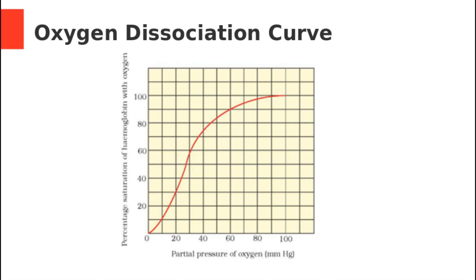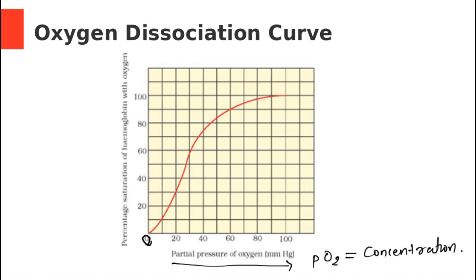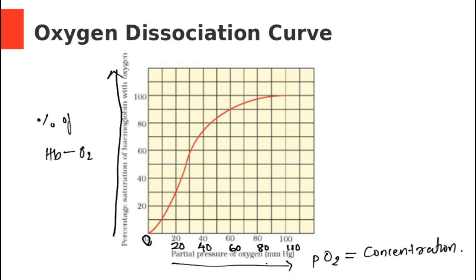We shall go into the details of the oxygen dissociation curve. On the x-axis you can see the partial pressure of oxygen, or PO2. PO2 basically represents the concentration of oxygen, given as 0, 20, 40, 60, 80, and 100. On the y-axis you can see the percentage saturation of hemoglobin with oxygen. As the oxygen concentration or PO2 increases, the percentage saturation of hemoglobin with oxygen is also increasing.